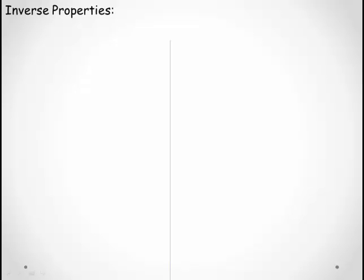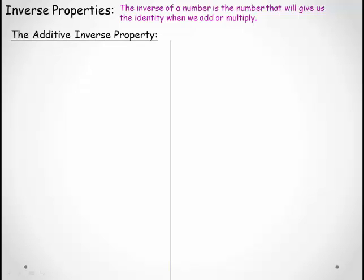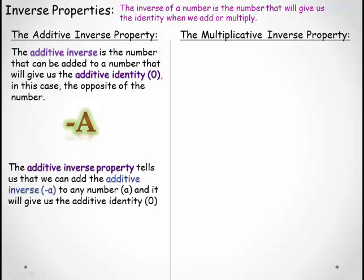If we have an identity property, we also have an inverse property. Inverse means opposite. The inverse of a number is the number that will give us the identity when we add or multiply. So if the additive identity is 0, the inverse is the number that gives us 0. The additive inverse is the opposite of the number — if our number is a, the additive inverse is −a. The additive inverse property tells us that a + (−a) will always equal 0.